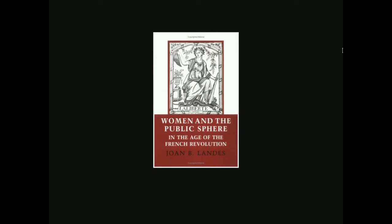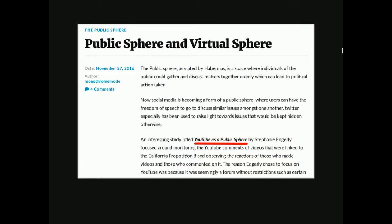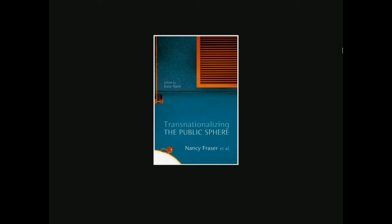Lots of other people have used public sphere theory to look into other communities. Feminists have looked at it and noted that women's role was traditionally seen as in the private sphere, not out in public — so many feminists have interrogated the theory to understand how women play a role in society. The Black public sphere is another idea — you can imagine how different it would be to understand a classless public versus a slave society. There are all kinds of public sphere theorists; one recent example was about YouTube as a public sphere.